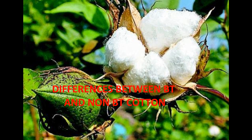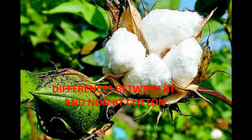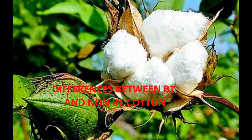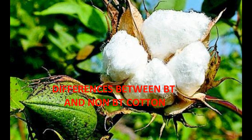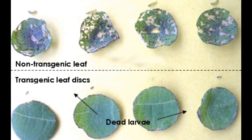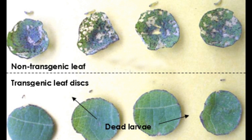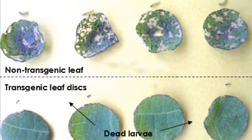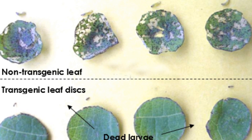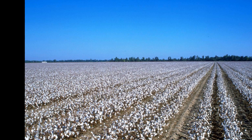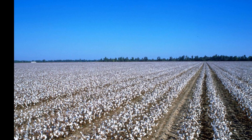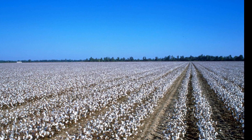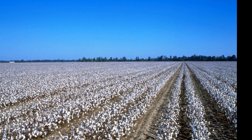Differences between Bt and non-Bt cotton. Bt cotton during 2010 in India earned the superiority of Bt cotton over conventional cotton. The plant production chemicals had significant positive influence in Bt cotton production, while it was negative and non-significant in non-Bt cotton forms. The decomposition analysis per acre output of cotton in Bt forms was higher by 16% over non-Bt forms.